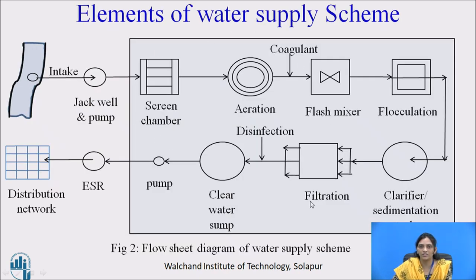These are the units of the water treatment plant. First, water is collected from the river intake, then it is sent to the water treatment plant via a jack well. After treatment, water is stored in an elevated service reservoir and then distributed. The first unit is the screen chamber. In the screen chamber, all floating insoluble materials — say water bottles, plastic bags, or any other large material — are removed from the water. This is the pre-treatment stage.